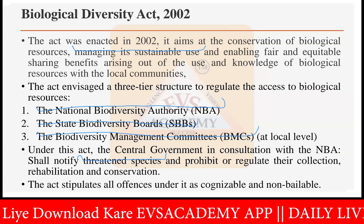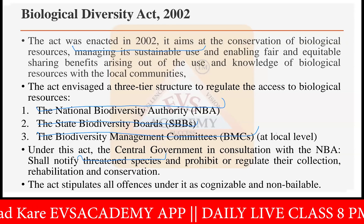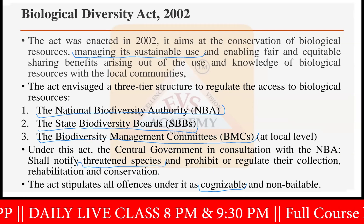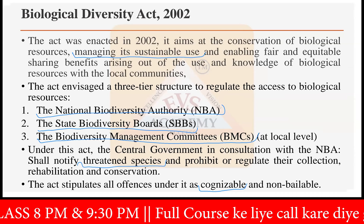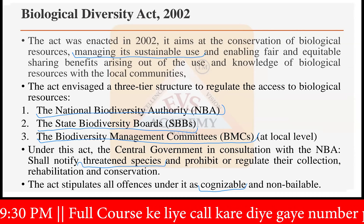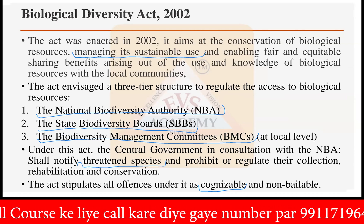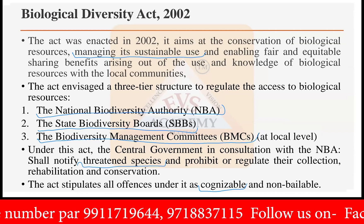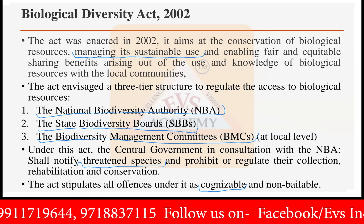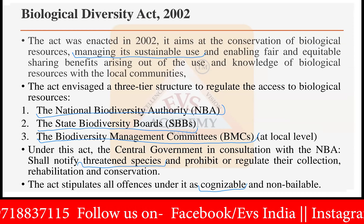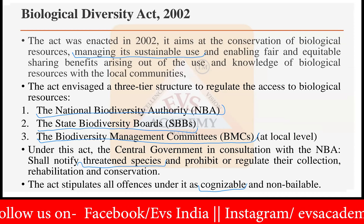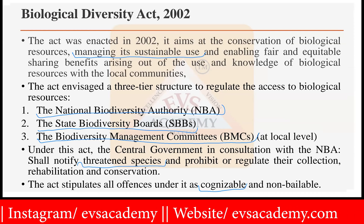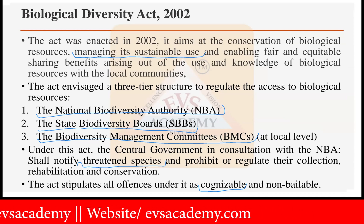Cognizable means that a police officer or authority can arrest you without a warrant. For offenses under the cognizable category, the police do not require any arrest warrant — they can directly arrest the person. There would be no grant of bail as well if anyone is found to be in violation of the Biodiversity Act of 2002. This is an important point to remember.